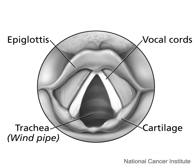The subglottal pressure is maintained by the respiratory muscles. Supraglottal pressure, with no constrictions or articulations, is about atmospheric pressure. However, because articulations especially consonants represent constrictions of the airflow, the pressure in the cavity behind those constrictions can increase, resulting in a higher supraglottal pressure.